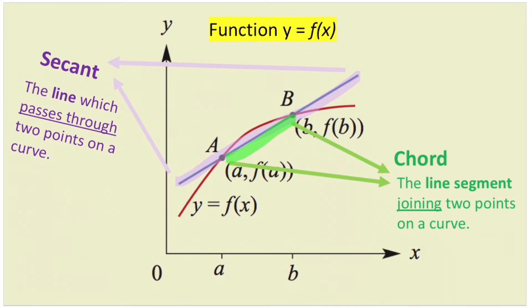Just a quick recap of what we did in the previous video. We looked at two terms: secant and chord. Secant is the purple line which passes through two points on a curve, and chord is the green line — it's a line segment that joins two points on a curve. So a chord is a section of a secant line.